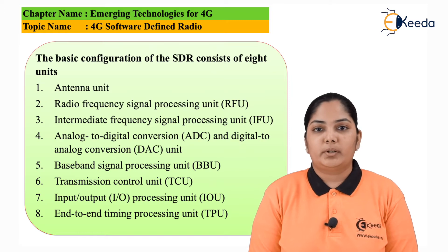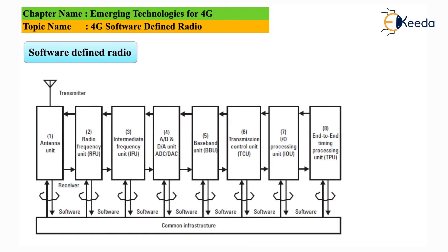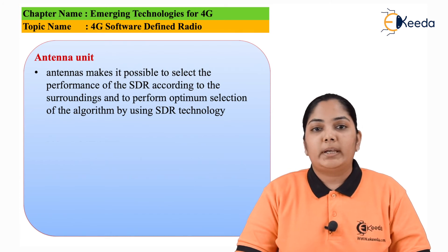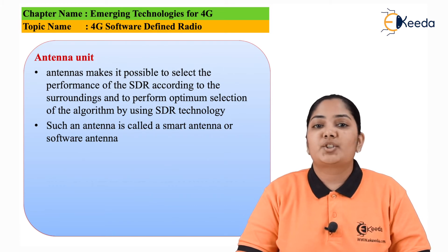Let us see the meaning of all these units. The first unit is the antenna unit. Remember, in the upper side there is transmission, and in the lower side there is reception. The signal transmitted from the end-to-end timing control unit up to the antenna forms the transmitter part, whereas the signal going from the antenna towards the end-to-end timing control unit forms the receiver of the system. The antennas are able to select the performance of the software defined radio based on external conditions — that is, traffic and channel availability. Hence these antennas are called smart antennas.